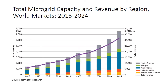Looking at total microgrid capacity and revenue by region from 2015 to 2024: in 2020, the Asia Pacific region (blue color) represents approximately 1,500 megawatts, and total global microgrid capacity in the current year is around 3,800 megawatts.